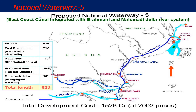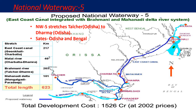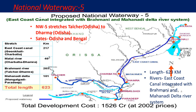National Waterway Five, NW5, stretches from Talcher in Odisha to Dhamra in Odisha. The length is 623 kilometers. The rivers are the East Coast Canal, integrated with the Brahmani and Mahanadi delta river system.